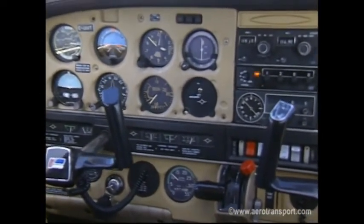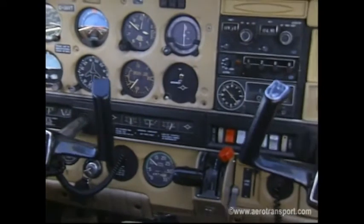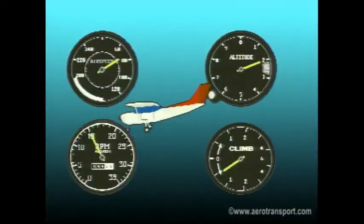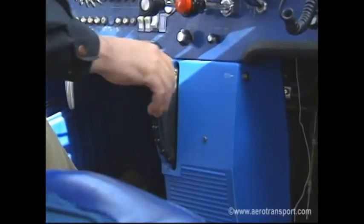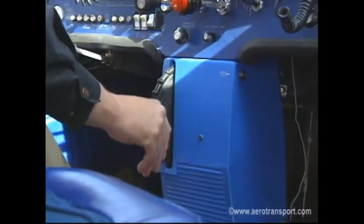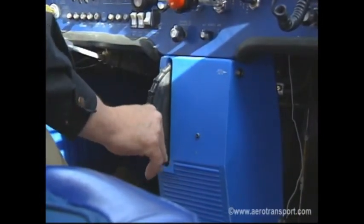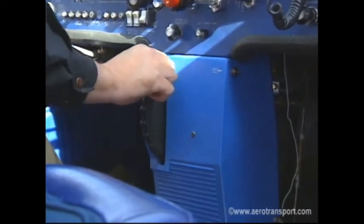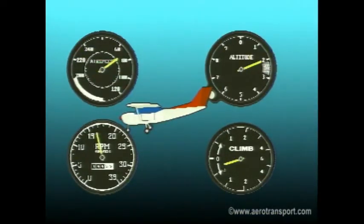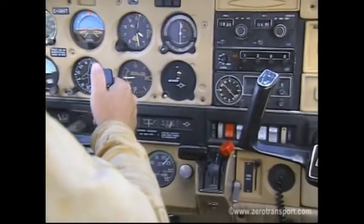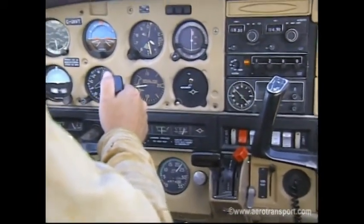If not, adjust power accordingly and retrim. If you want to decrease the rate of descent, increase the power to give you the desired rate, adjust the attitude to maintain the best descent speed, and then retrim. Remember, proper trim is the key to smoothly changing from one attitude or airspeed to another. You may use any combination of airspeed and rate of descent to obtain the effect desired.